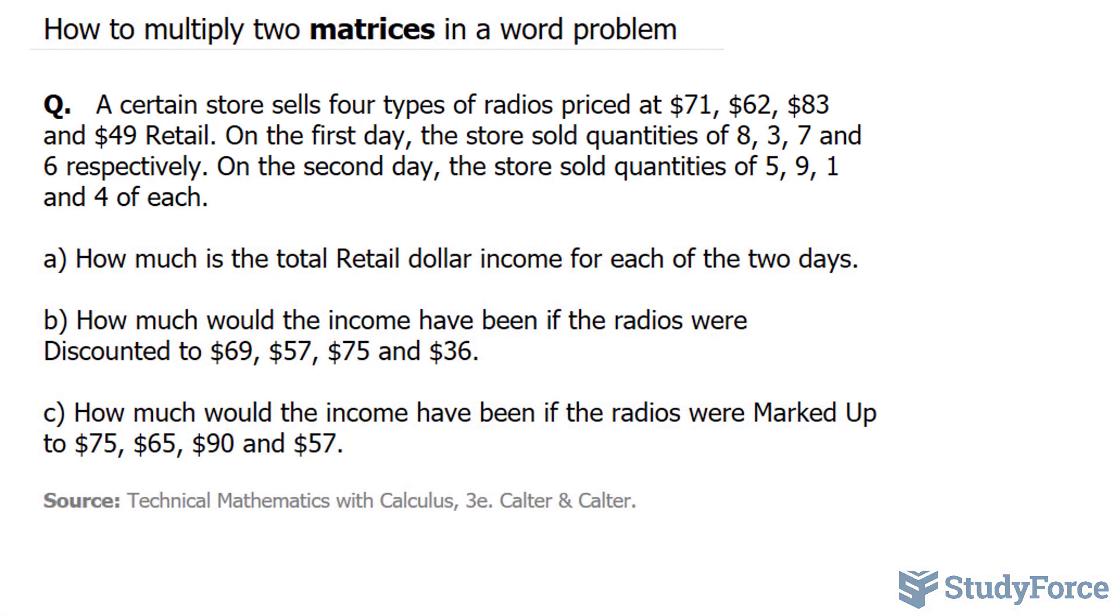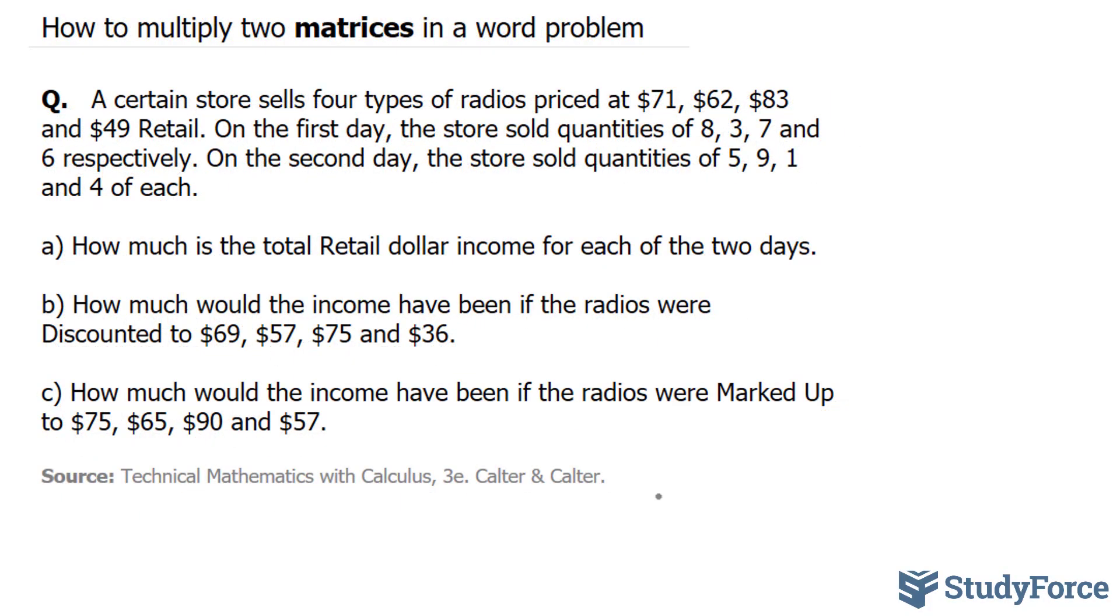The first part reads: How much is the total retail dollar income for each of the two days? To represent this as a matrix, we need to produce a row vector for the types of radios.